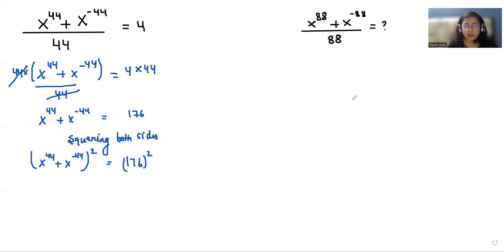Now here I am using the very famous identity, that is a plus b whole square equals a square plus b square plus 2ab.